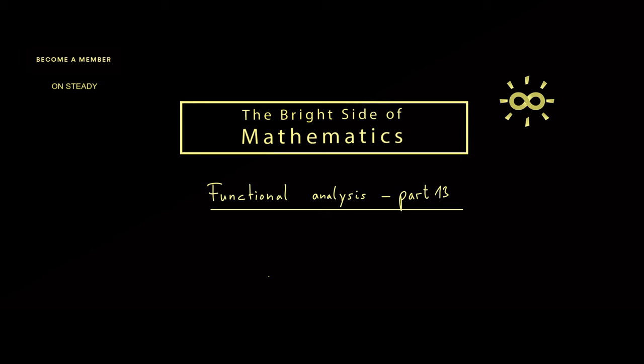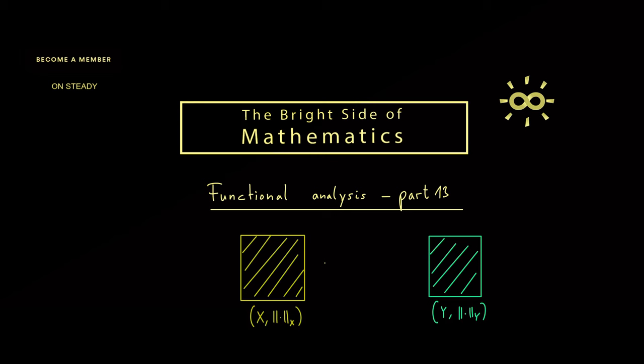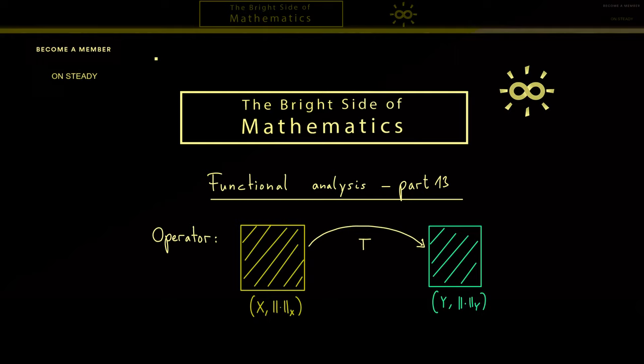So the picture should look like this: we have one normed space on the left hand side and one on the right hand side. Now an operator T is just a map that conserves some structures of our spaces. We don't call T a function but an operator simply because often we have a space of functions as a domain or the codomain. So every time you see the notion operator, you know it's just another name for a special map.